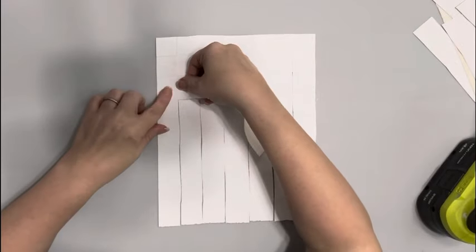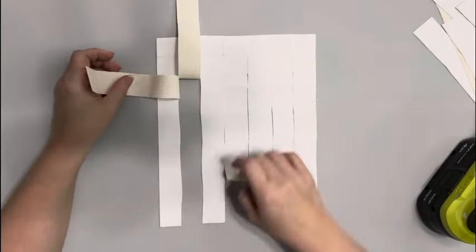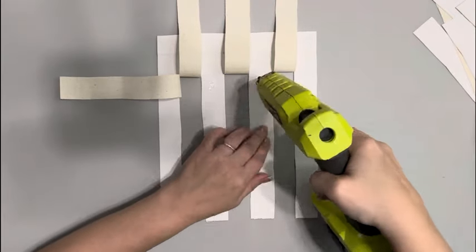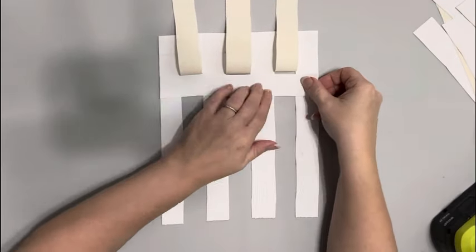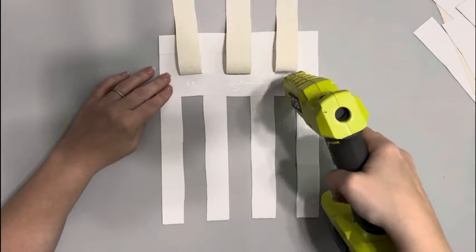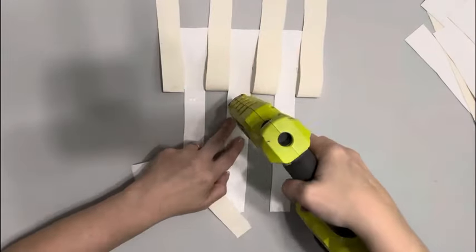Once I have that first row started, it's a little bit easier to get them. I just hot glue it on that first one and then flip over every other one, hot glue the canvas underneath, and then hot glue the top pieces and pull those back over.